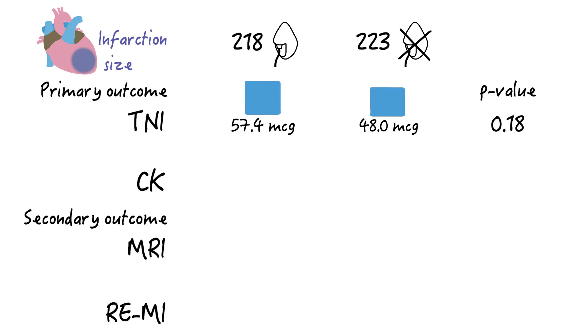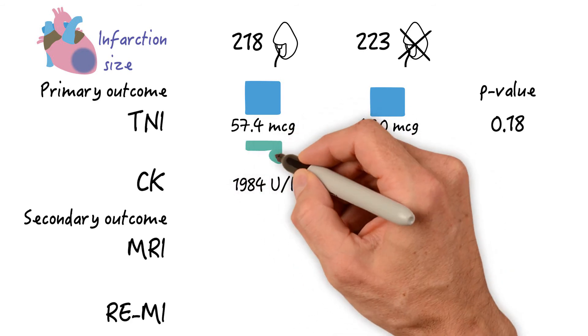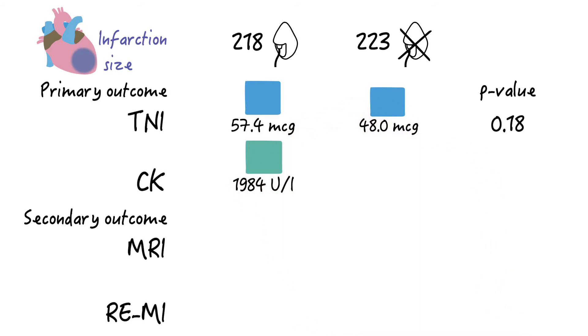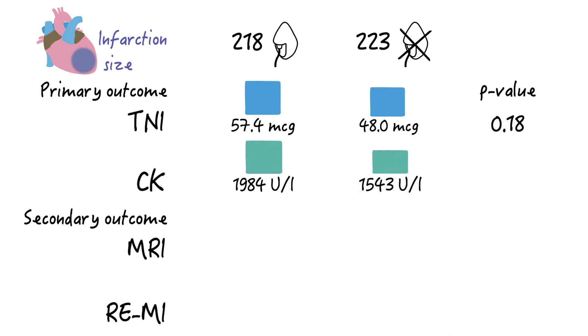CK, very different situation. Mean peak CK levels were 1,948 units per liter in the oxygen group versus 1,543 units per liter in the room air group. P-value 0.01. So significant.